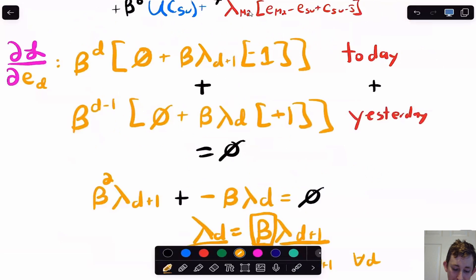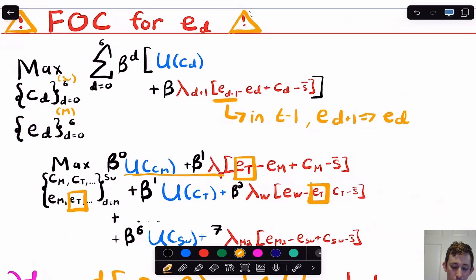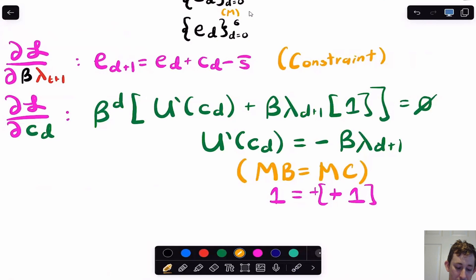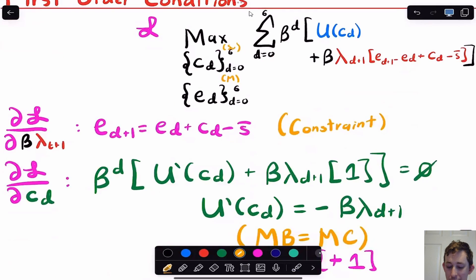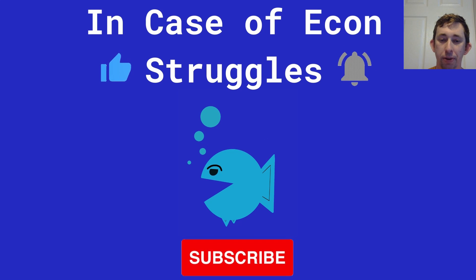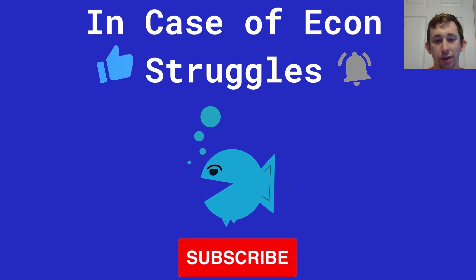Maybe in a separate video I'll go over this first order condition in more detail. But hopefully this shows that in dynamic optimization, you have to take a first order condition for every choice variable — in this case CD — and every state variable — ED — and make sure you set your constraint up correctly with the right discount factors. You also need to understand this is a plan where you go day by day, thinking about your optimal path when you wake up on Tuesday, Wednesday, and Thursday. We didn't fully solve this problem, but if you'd like that walkthrough, leave a comment. If this video helped, please like and subscribe. See you next time for another case of econ struggles.